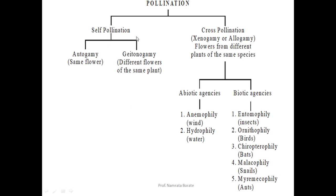In my last video we discussed two types of pollination: self-pollination and cross-pollination. In self-pollination there is no need of a pollinating agent, but in case of cross-pollination there is a need for a pollinating agent. In cross-pollination there are two types of agents: first, abiotic agencies, and second, biotic agencies. Abiotic agencies include anemophily, meaning wind, and hydrophily, meaning water.